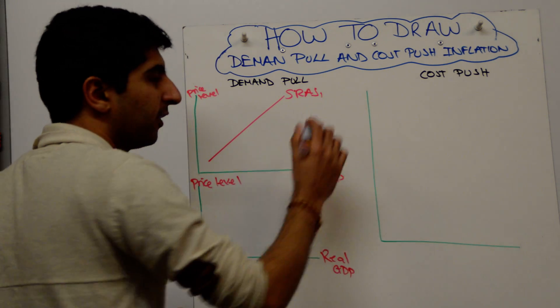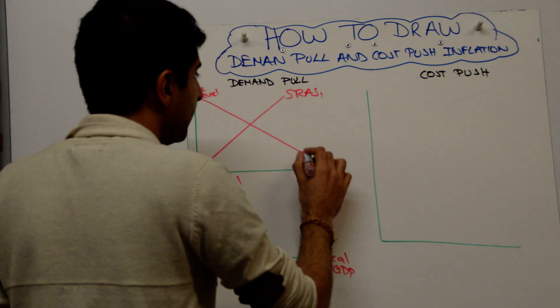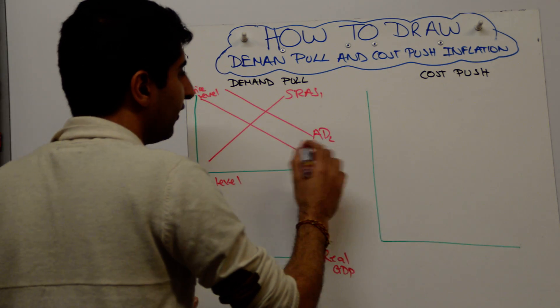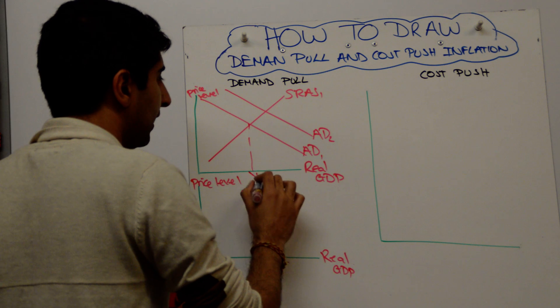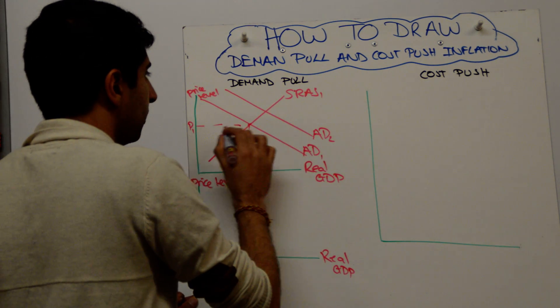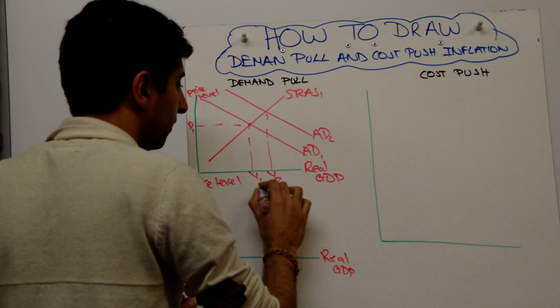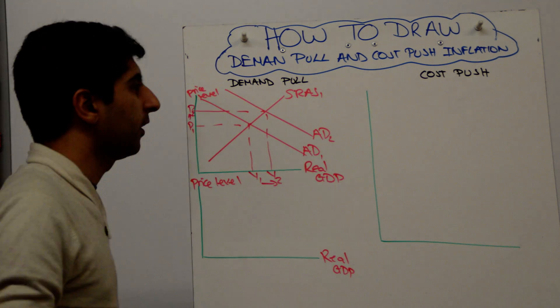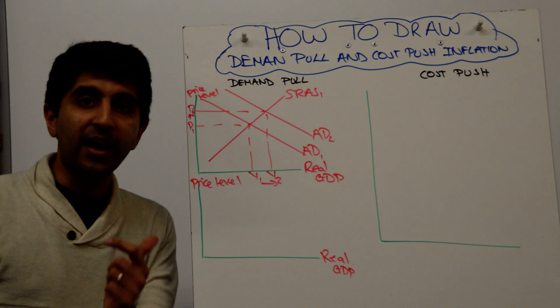Let's look at the classical model first. So if we take SRAS here, let's not draw an LRAS - don't need it on this one. So AD and SRAS, a simple AD shift to the right from AD1 to AD2. Label your equilibria, and you will see there is an increase in the price level from P1 to P2. That is your demand-pull inflation.